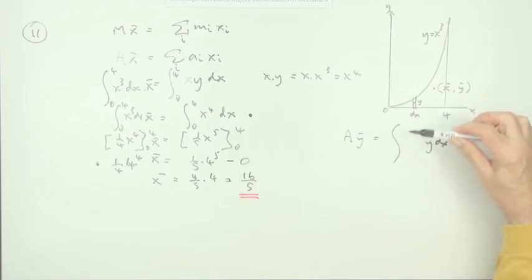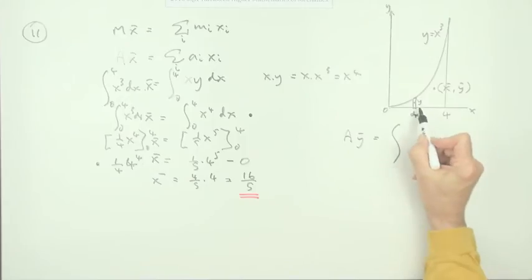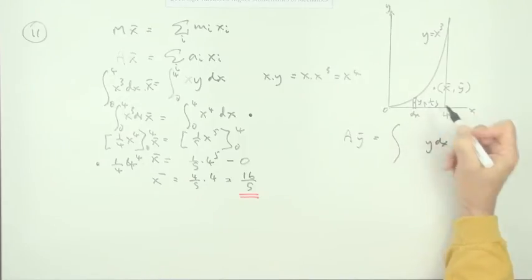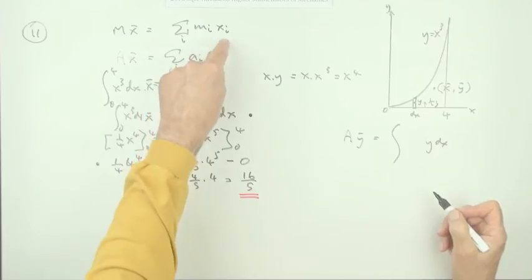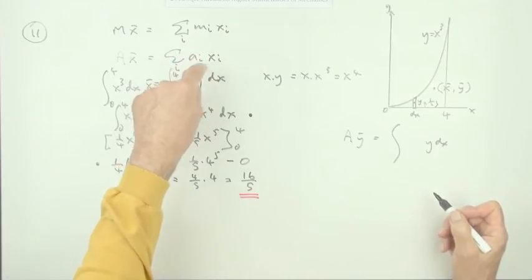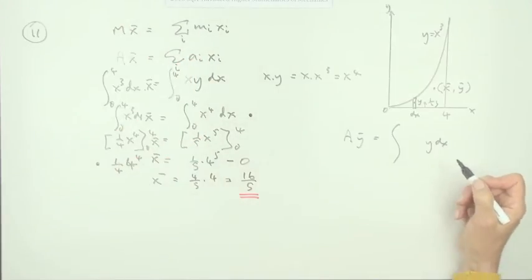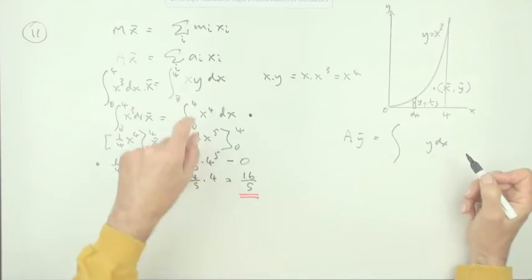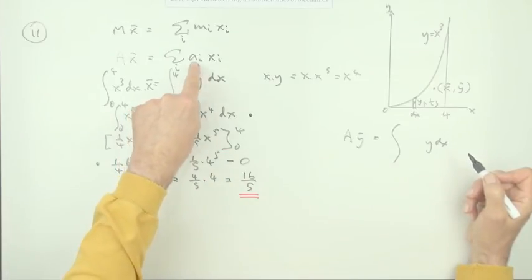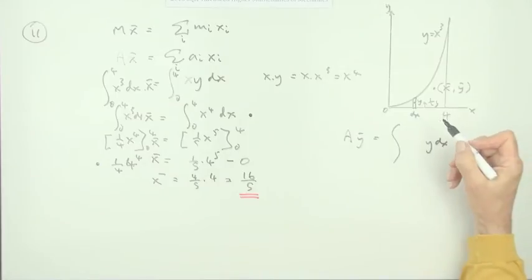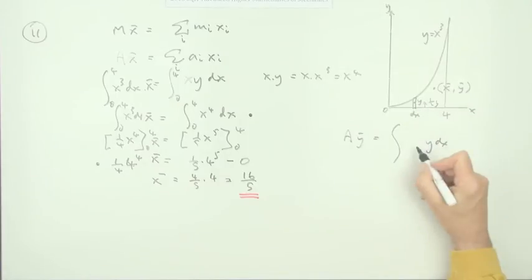But this time since you've taken moments about the x-axis, the distance up to there is just a half of y. So when you're working out the individual little bits, we're just going down to area because we cancelled out the constant mass per unit area. Then the area times the distance will be the y dx times the half y. So it's a half of y squared.